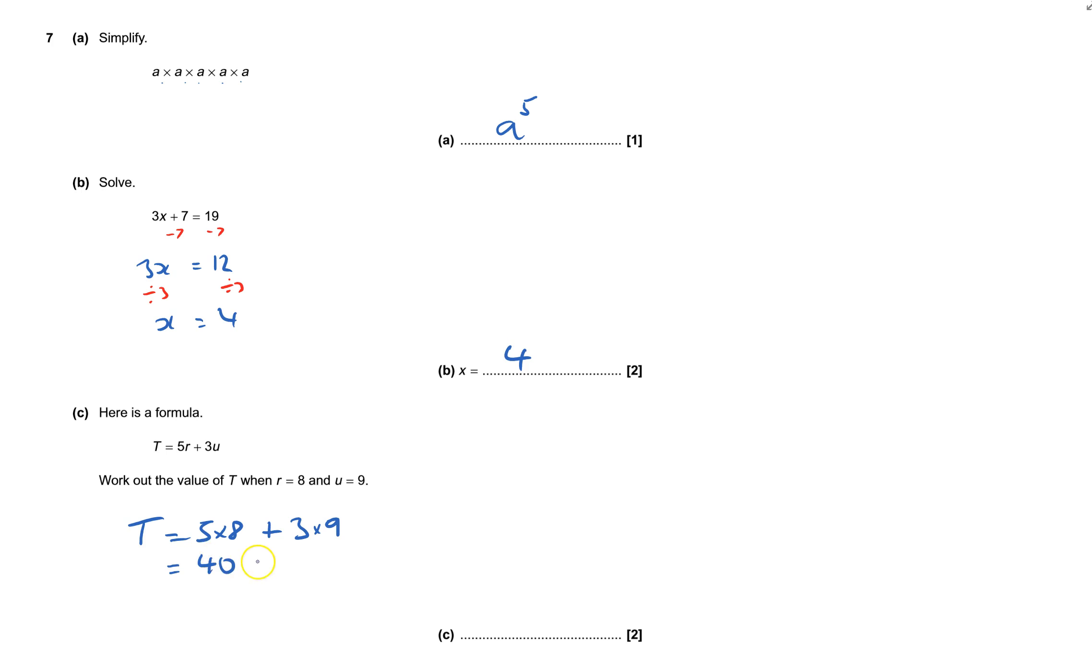And that'll be 40 plus 27, so that's 67, and that's 7 done.